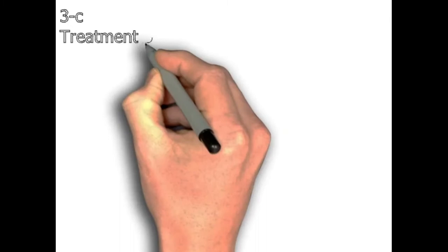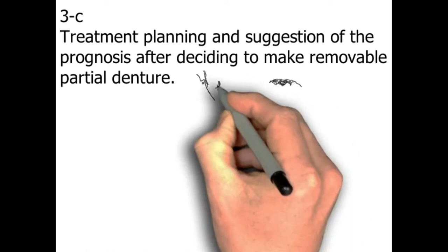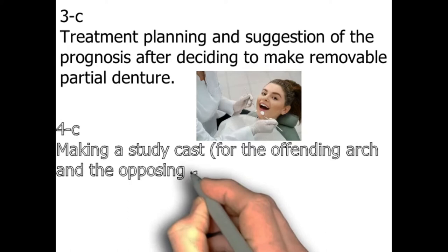Step number three: treatment planning and suggestion of the prognosis after deciding to make a removable partial denture — that's a clinical step. Step number four: making a study cast for the offending arch and the opposing arch by a primary impression — that's a clinical step.